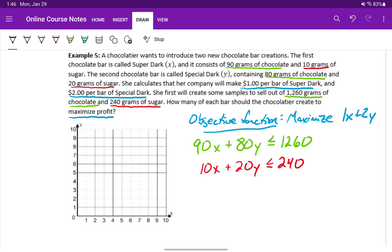And then the two implicit, implied inequality statements is that x, the number of the first type of bar that she makes, has to be greater than or equal to zero. She can't make a negative value of bars. And similarly, y has to be greater than or equal to zero.